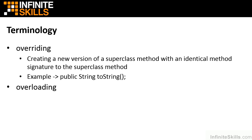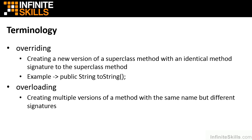Another way to create methods in a subclass or parent class is by overloading. When we overload, we have the same method name but multiple versions that differ based on parameters — different signatures with different parameter lists. That gives us multiple options to make a method work in a specific way. A great example of overloading is constructors: all constructors have the same name as the type, but we can have different parameter lists and do different things with multiple constructors. They all have the same name but different parameters.